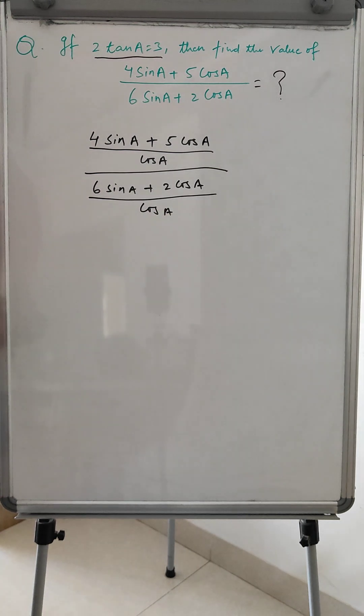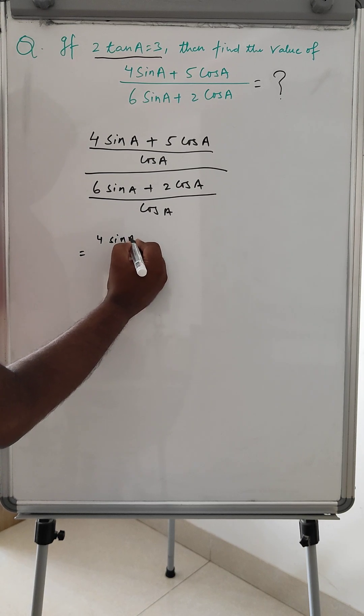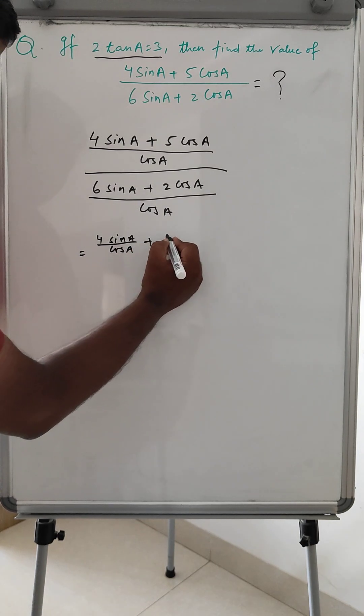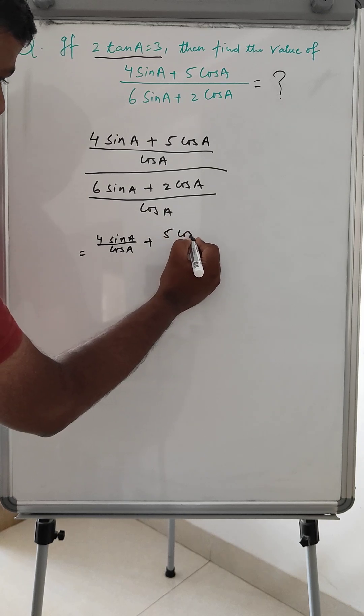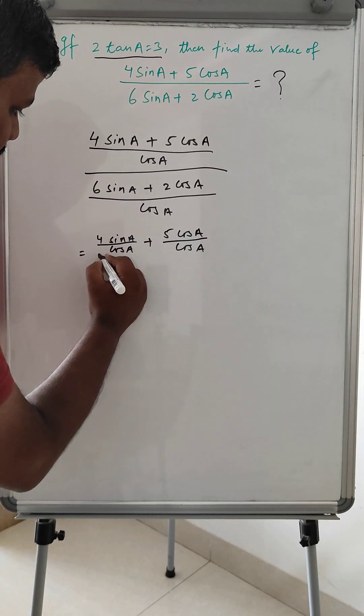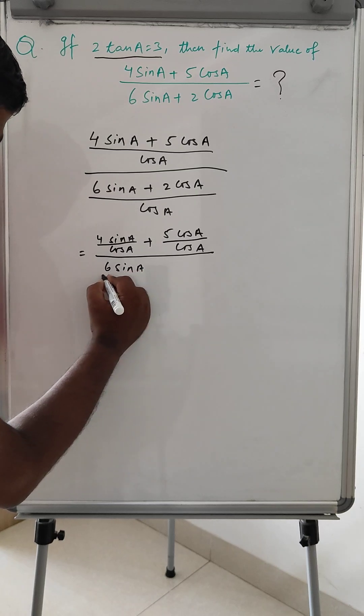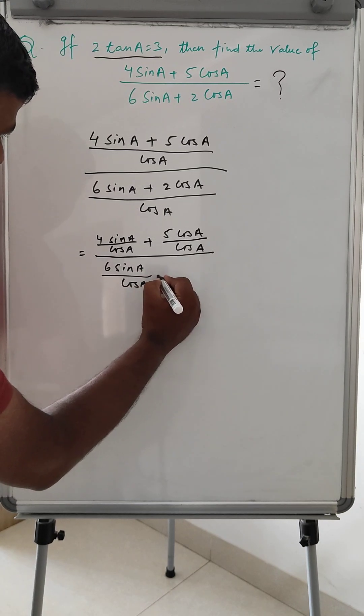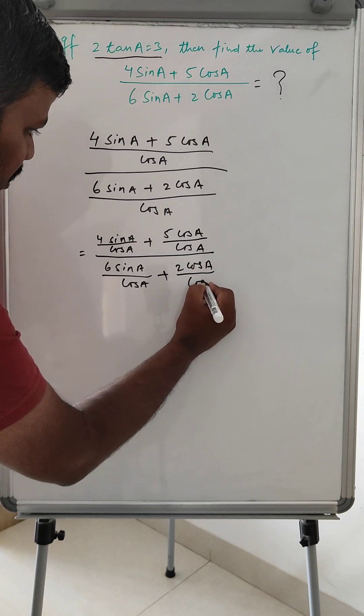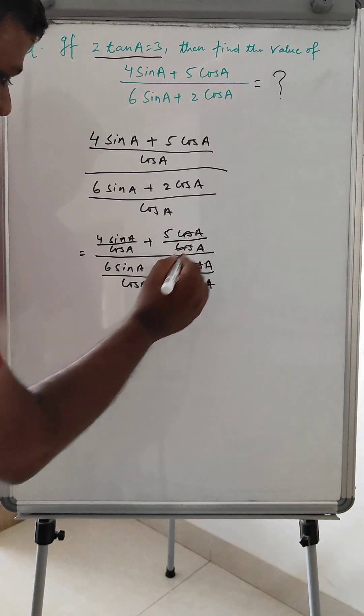Okay, then what will happen? Here 4 sin A divided by cos A plus 5 cos A divided by cos A. Then 6 sin A divided by cos A. So this will get cancelled. This will get cancelled.